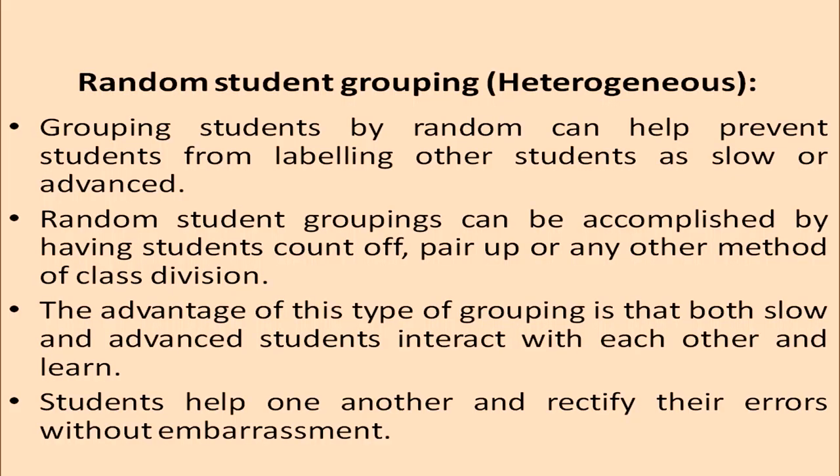Random student grouping, or heterogeneous grouping, can help prevent students from labeling others as slow or advanced. It can be accomplished by having students count off, pair up, or any other method of class division. The advantage is that both slow and advanced students interact and learn from each other, and students help one another rectify errors without embarrassment.